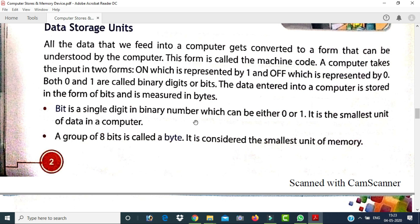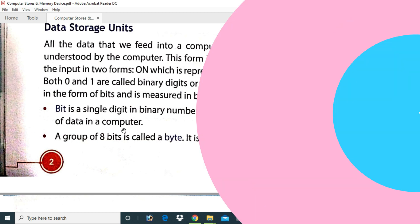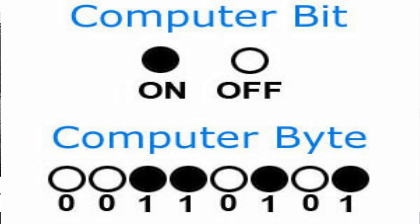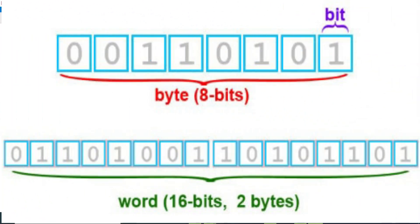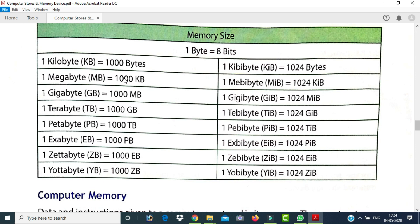A bit is a single digit in a binary number, which can be either zero or one. It is the smallest unit of data in a computer. A group of eight bits is called a byte, which is considered the smallest unit of memory. One kilobyte equals 1,024 bytes, and one megabyte (MB) equals 1,024 kilobytes.